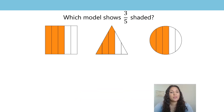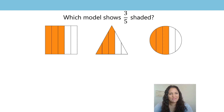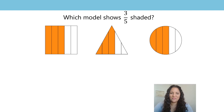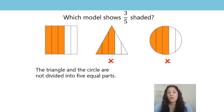First of all, let's review the practice activity that you had at the end of the last session. Which model shows three-fifths shaded? Did you have a go at this activity? Which one did you think had three-fifths shaded? Well, the triangle and the circle are not divided into five equal parts, so they are not showing three-fifths shaded.